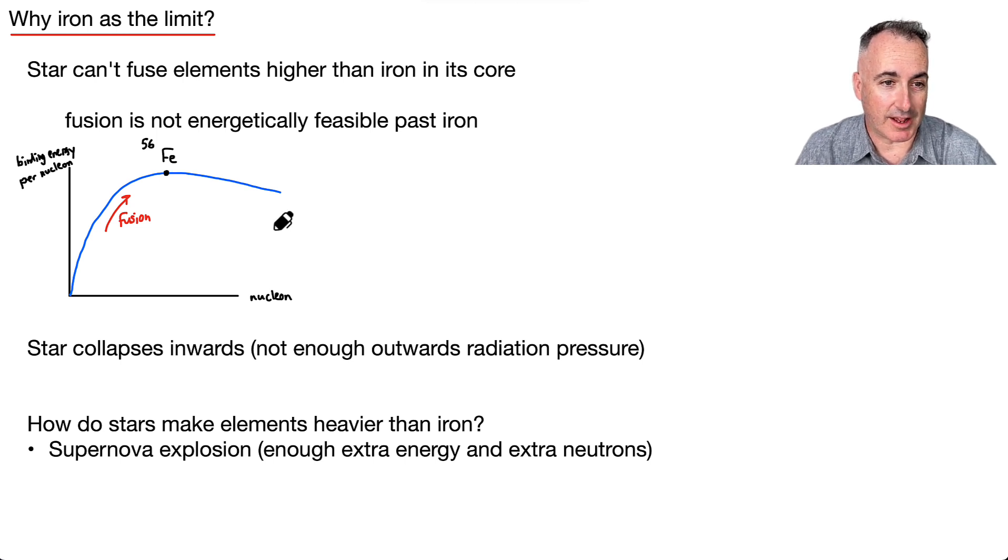But how do stars make anything heavier than iron then? Well, that's when you need extra energy. So you need things like extra energy and extra neutrons. For example, in the supernova explosion itself, then it can make all the extra stuff. But stars are happily burning and fusing all the way up to iron, no problem. Once it reaches iron, it blows up and then it makes the extras.